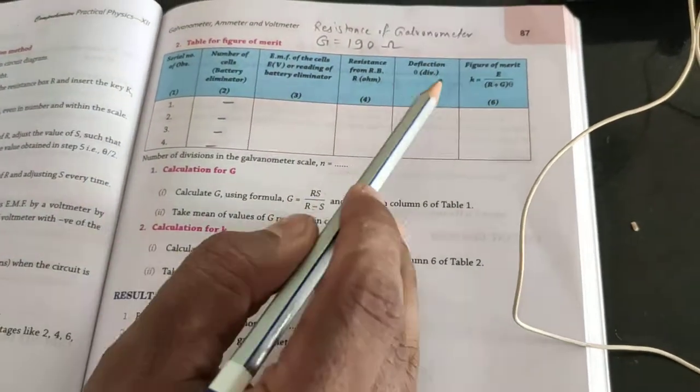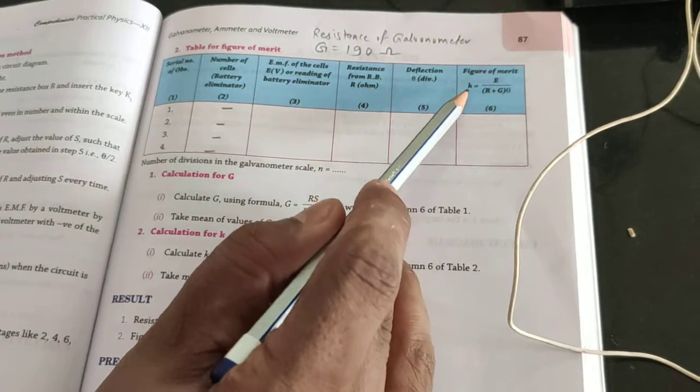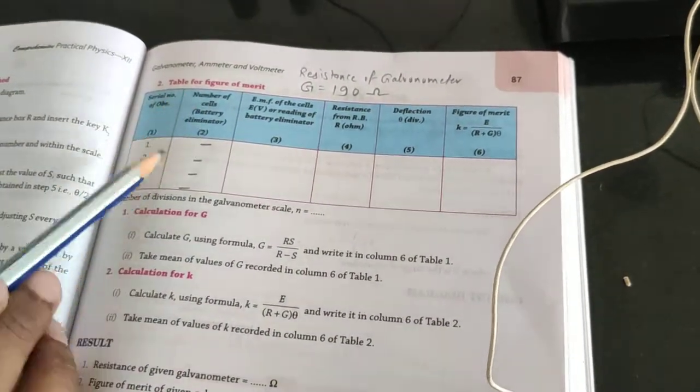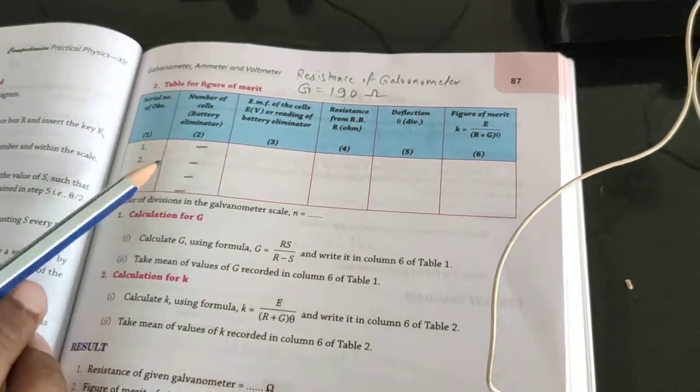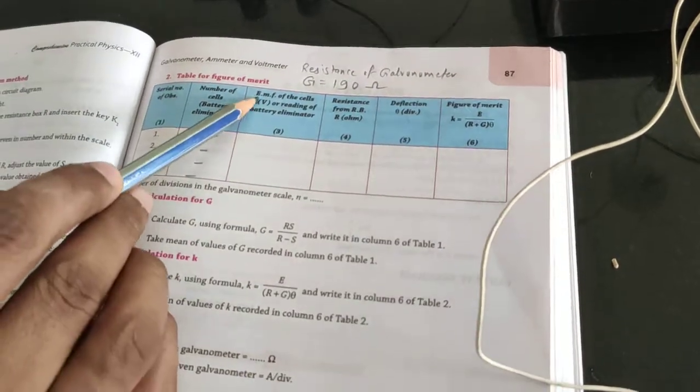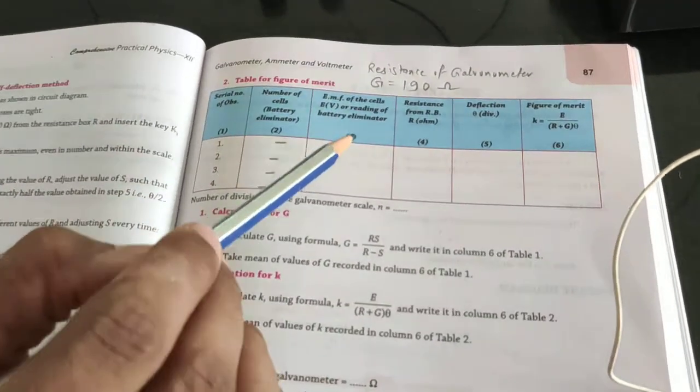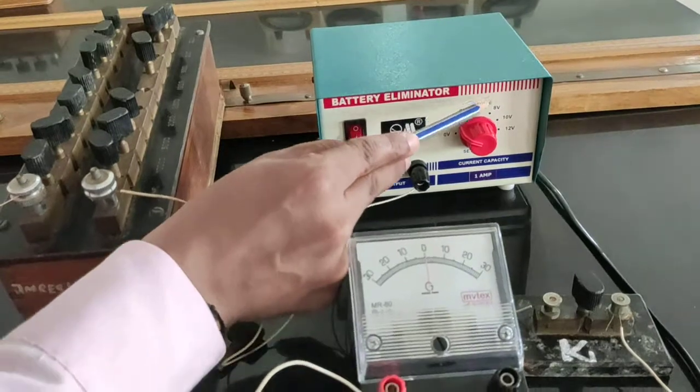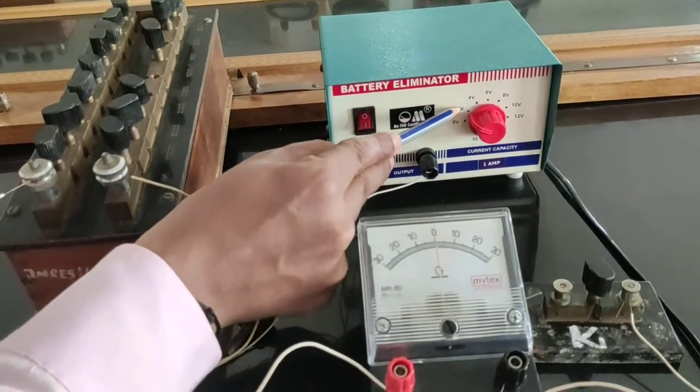Now what is the procedure? In this first column we are not using because we are not using different cells, so I will just remove this first column. Now we are having directly EMF of this cell. As you can check it out on the battery, it has been written 2-4-6 volt. So we have kept this 2 volt constant.